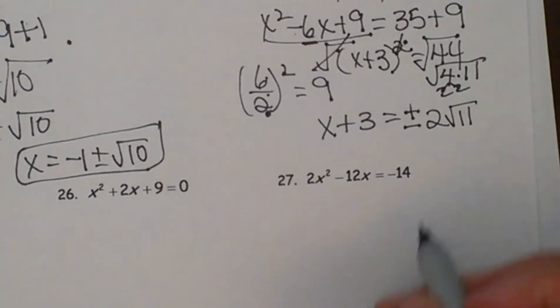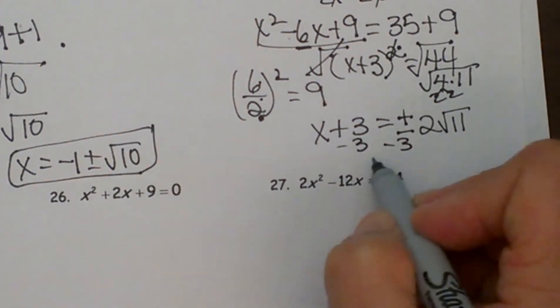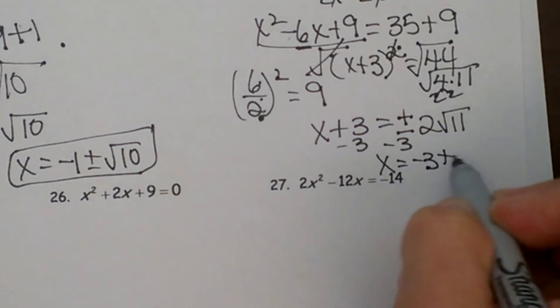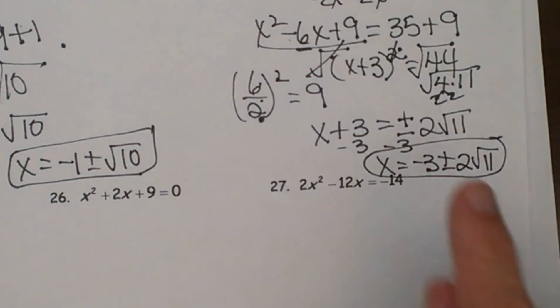We still aren't quite done. We haven't solved for x so let's subtract 3 from both sides. So x is equal to negative 3 plus or minus 2 square root 11, and that is how you use quadratics and complete the square to solve a quadratic.